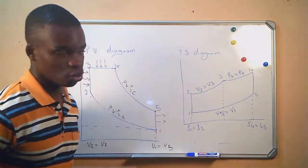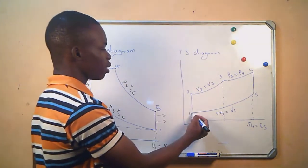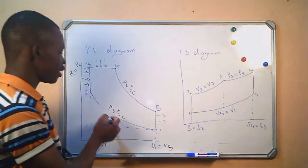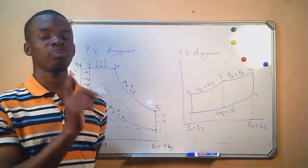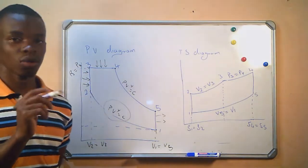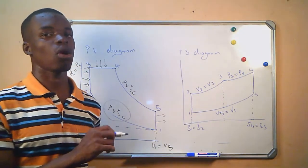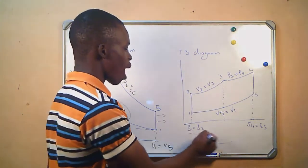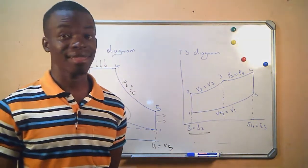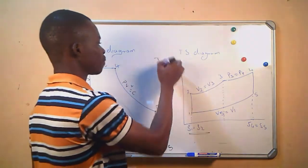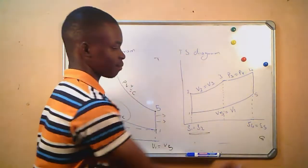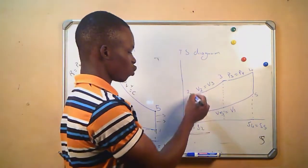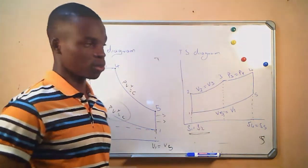We move to the TS diagram of the Joule cycle. From 1 to 2, that is our compression, and it is taking place using the law PV raised to gamma equals to C, which is the adiabatic law. We know under adiabatic law there is no heat exchange. Therefore, our entropy remains the same from 1 to 2. S1 is equal to S2.